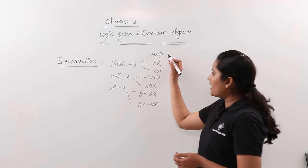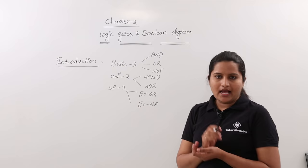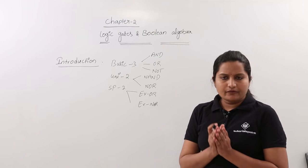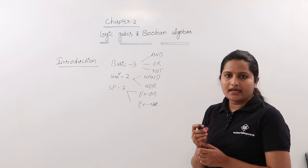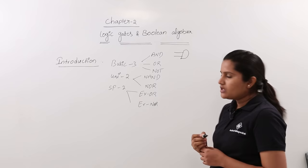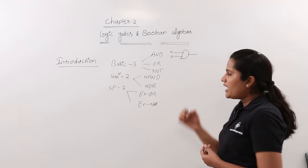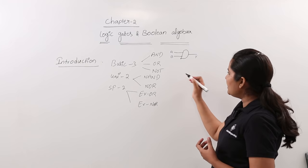For the AND gate, the functionality is like multiplication. For example, if you are having a two-input AND gate — you may have an N-input AND gate, but for example I am taking the logic symbol for the AND gate. This is the logic symbol for the AND gate, shaped like a D with two lines. This is a two-input AND gate with inputs A and B, and output Y.